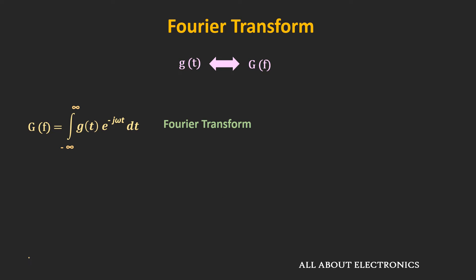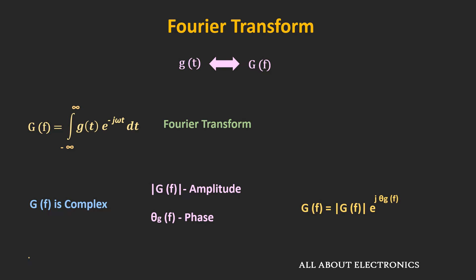Typically, the Fourier transform is complex — that means it has both amplitude and phase, and it can be expressed in this fashion. Now practically, all the signals which we encounter are real signals. So in the time domain, if signal g is a real signal, then g(f) and g(-f) are complex conjugates.